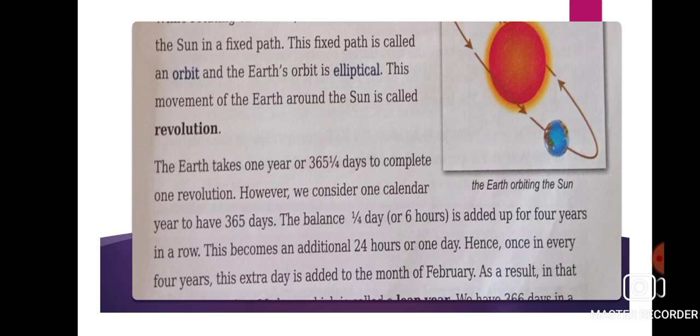The Earth takes one year, or 365 and one-quarter days, to complete one revolution. Underline 365 and one-fourth days. We consider one calendar year to have 365 days — that is why we have 365 days in one year. The Earth rotates once in 24 hours, which we consider as one day, and it completes its revolution in 365 and one-fourth days, which we consider as one year.